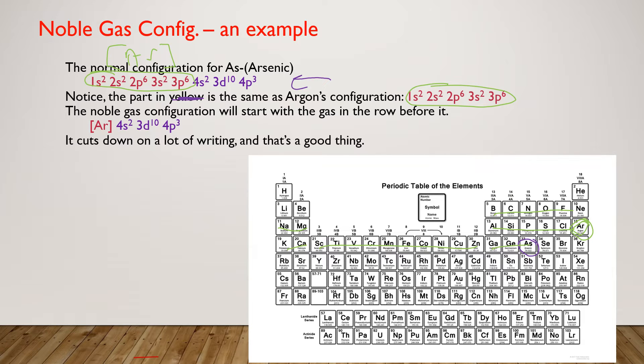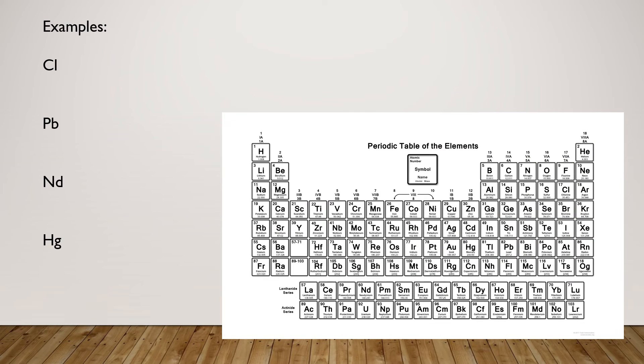So again, you have to pick the noble gas that comes before it. The noble gas after arsenic would be krypton, but we want the one in the row before it. This cuts down on a lot of writing for you. We'll get a couple of examples together before you go off on your own.